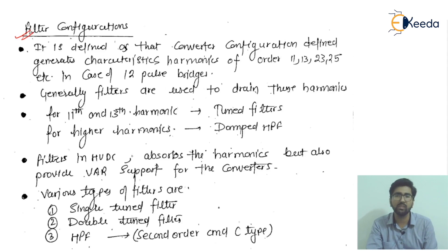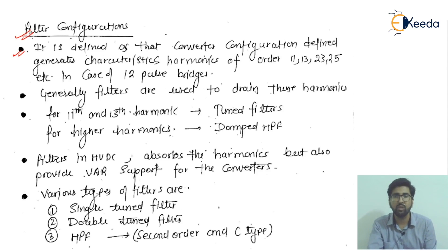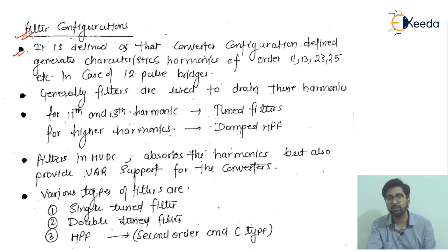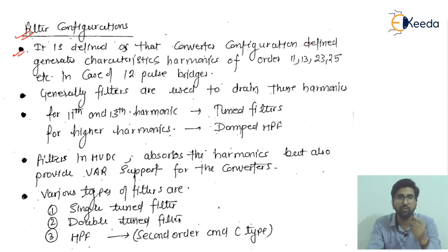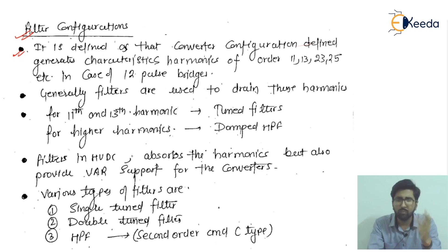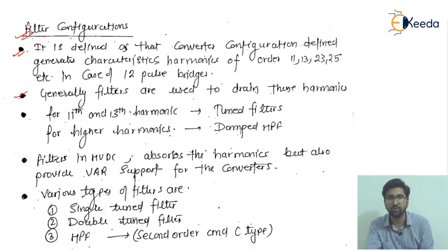The most important points are listed here. The converter configuration is defined such that it generally generates characteristic harmonics of orders 11, 13, 23, and 25. In the case of 12-pulse configurations, as we have studied, these are called converter configurations — not filter configurations. Filters are used to drain these harmonics.